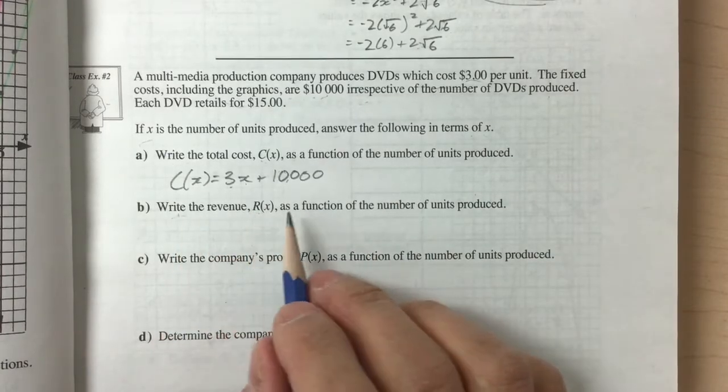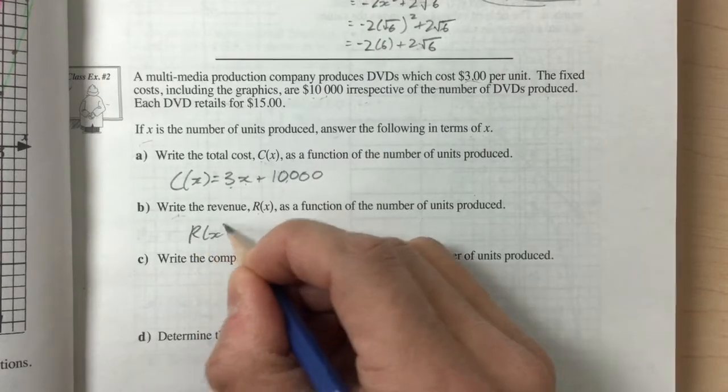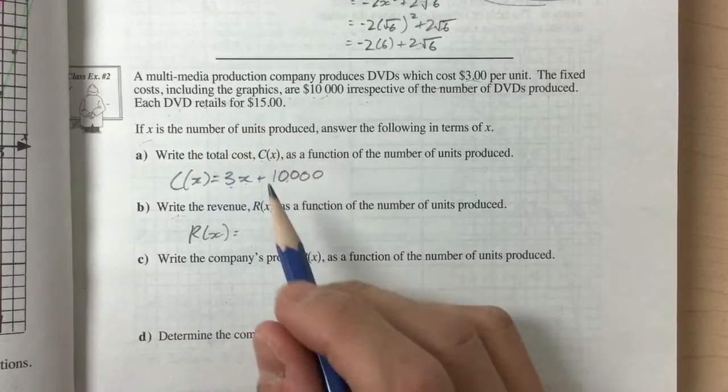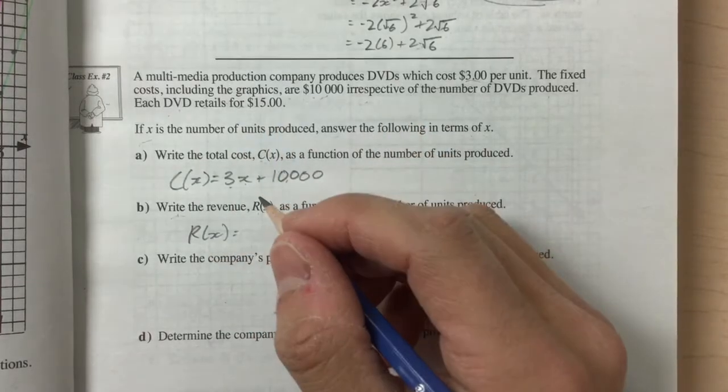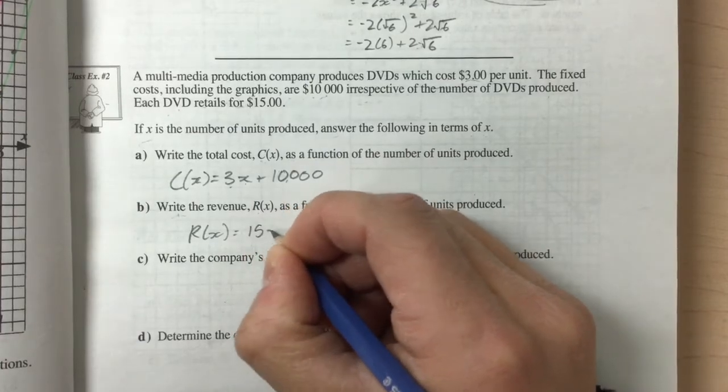Write the revenue, r of x, as a function of the number of units produced. So r of x is the revenue. Each DVD retails for $15. So if we were to sell a DVD, however many DVDs, we would multiply by 15. So 15x.